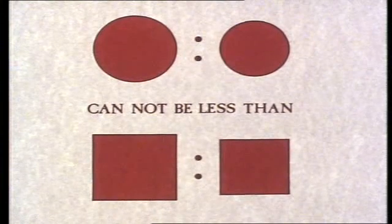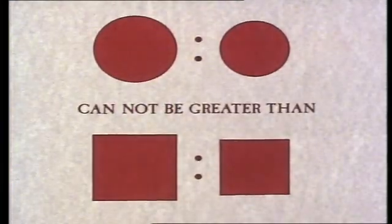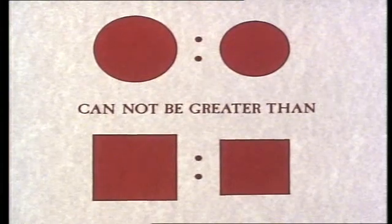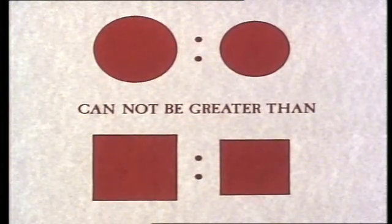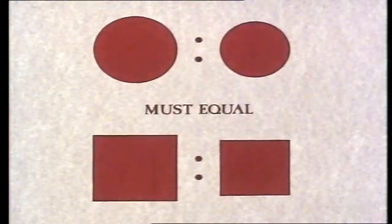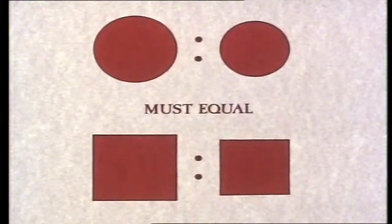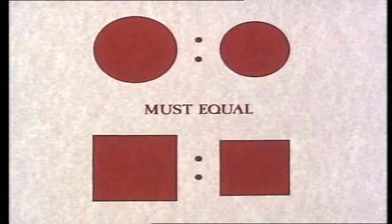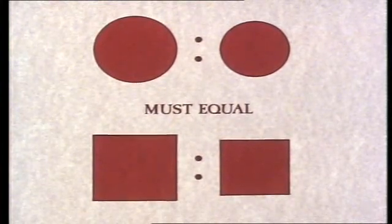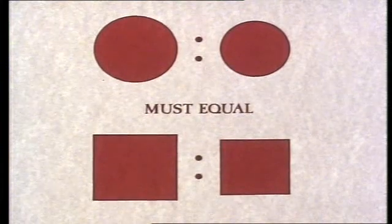A similar argument, first inscribing a polygon in the larger circle, shows that the ratio of the areas of the circles cannot be greater than the ratio of the squares either. Having exhausted these two possibilities, we are left with the only possible conclusion: the ratios must be equal. This remarkable type of proof enabled Eudoxus to prove similar theorems on the relationships of plane and solid figures with curved boundaries in the rest of Book 12.